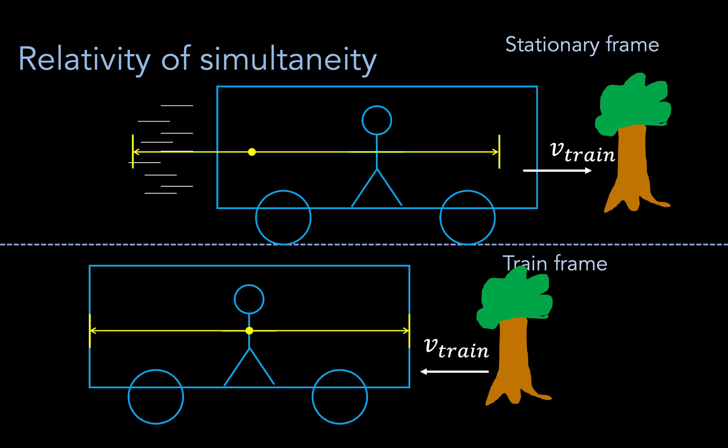Whereas for the observer on the train, these two events are simultaneous, for an observer stationary with respect to the ground, they are not. In other words, reality looks different depending on where you stand.